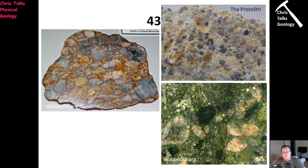This is sample 43 and I'm going to tell you right now this is the metaconglomerate. I didn't take a picture of this, so unfortunately these pictures are from external sources — both from Wikipedia. This picture here is actually of a sedimentary conglomerate. So how do you tell the difference between a metaconglomerate and a regular sedimentary conglomerate?